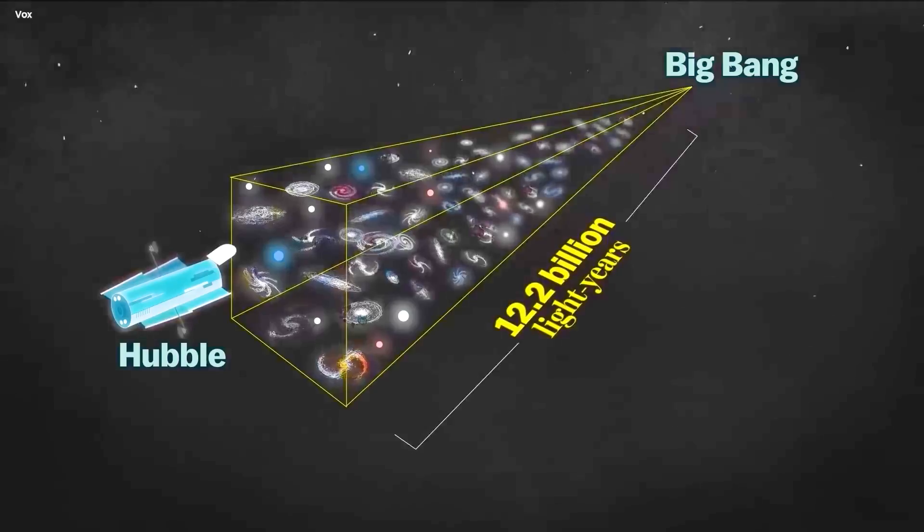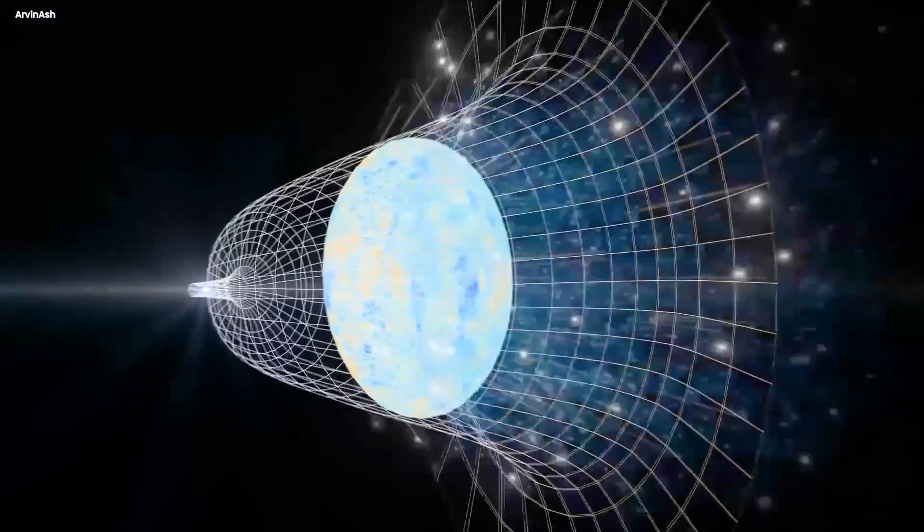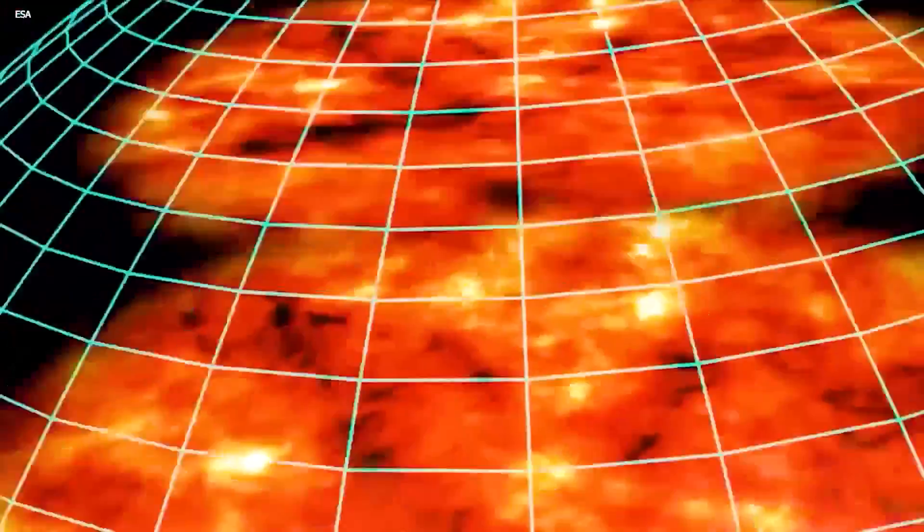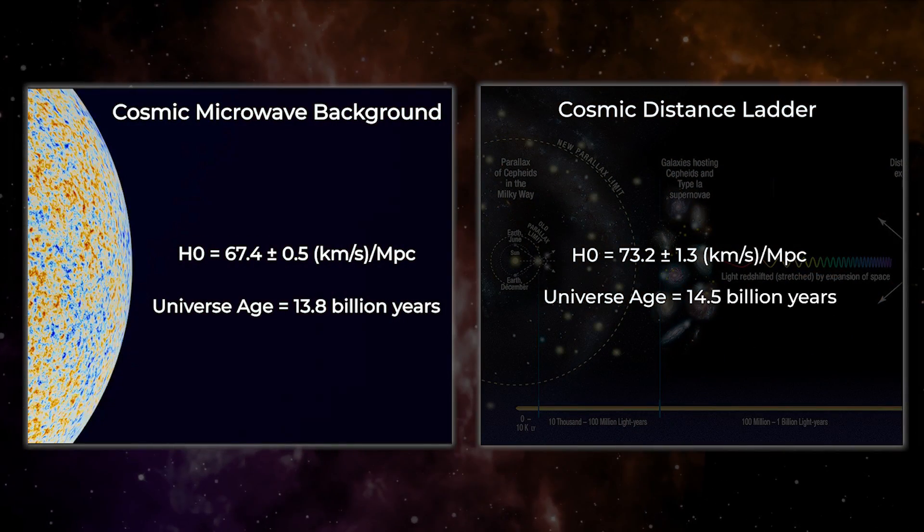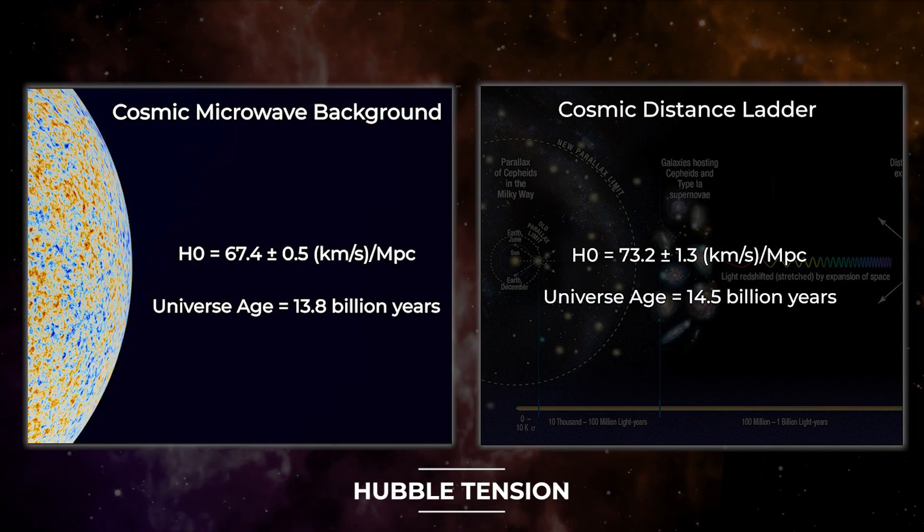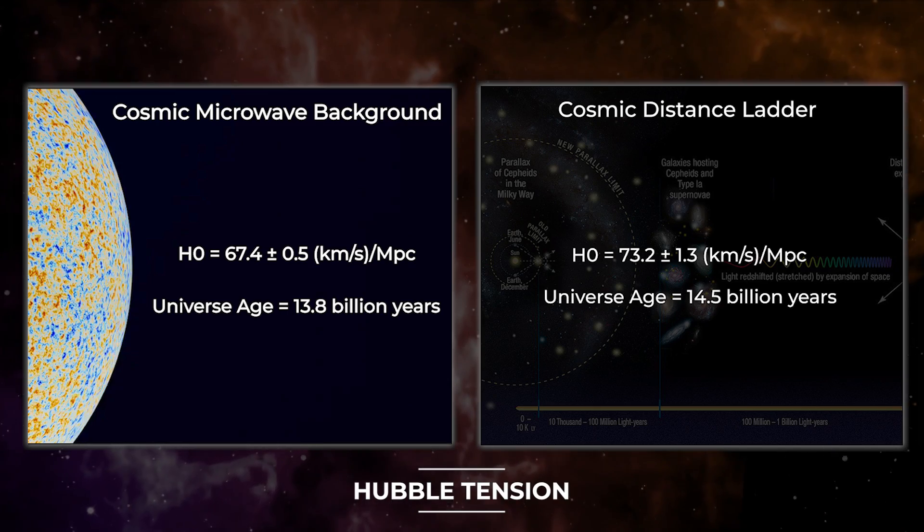Thus, the Hubble constant refers to the rate of expansion of the universe. But the discrepancy between the outcomes of the two methods is known as the Hubble tension, and this is known as the crisis in cosmology.